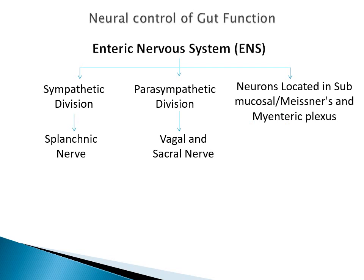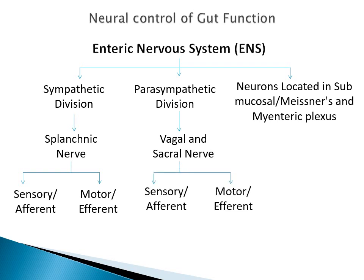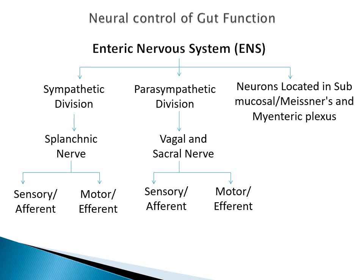The parasympathetic division is innervated by the vagal and sacral nerves, both of which have sensory and motor components, with afferent and efferent divisions. The sympathetic innervation of the gastrointestinal tract involves preganglionic efferent neurons leaving the spinal cord that synapse in the sympathetic ganglia outside the gut, and transmission at the synapse is mediated by acetylcholine.